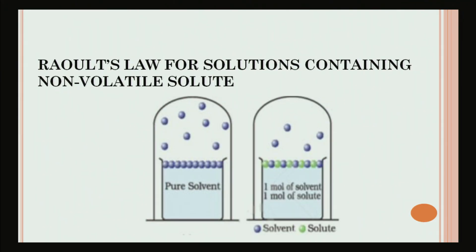Raoult's law for solutions containing a non-volatile solute: if we have an aqueous solution containing a non-volatile solute such as sugar or salt, then the vapor phase of such a solution consists of vapors of solvent A only, because the solute is non-volatile. Since the mole fraction of the solvent in solution is less than one, according to Raoult's law the vapor pressure of the solution will be less than the vapor pressure of the pure solvent. In the second figure, the vapors are fewer because the solute is non-volatile and is not going to evaporate.